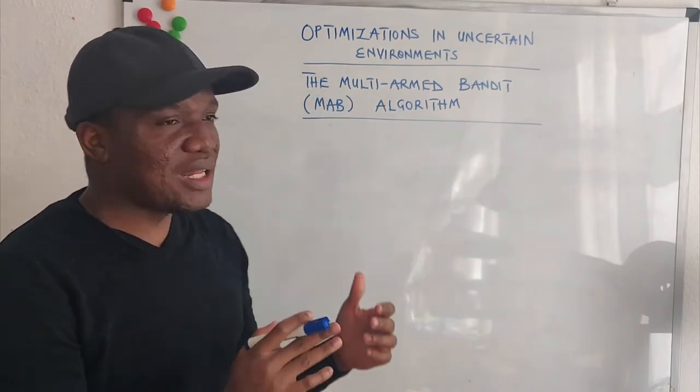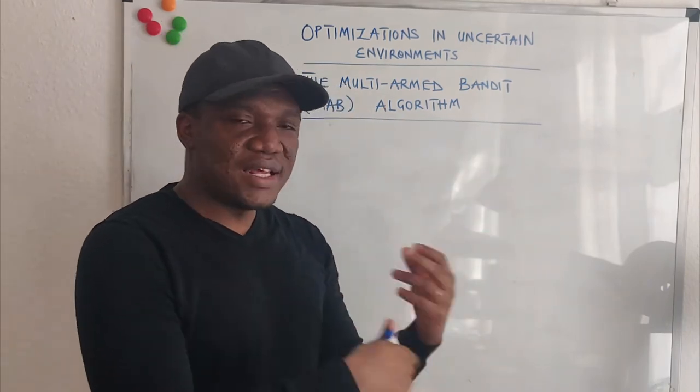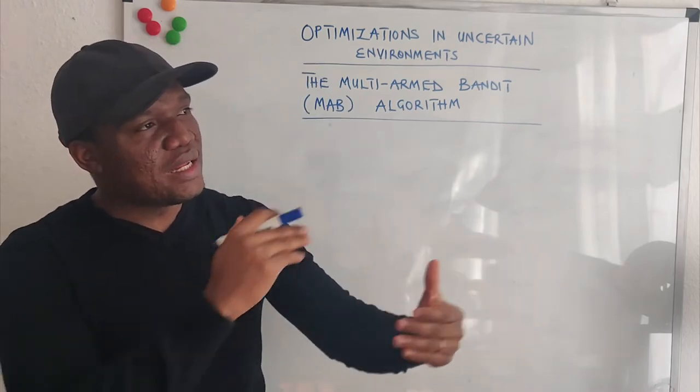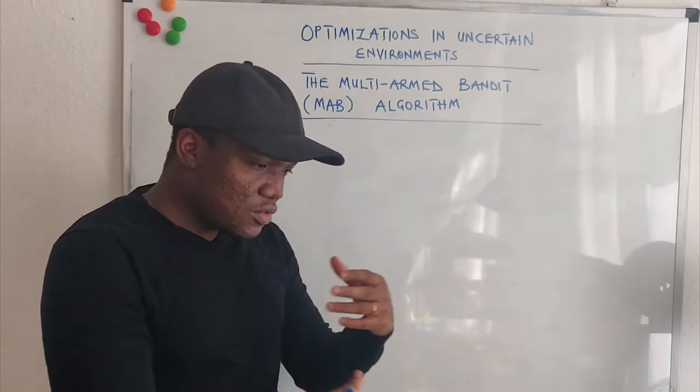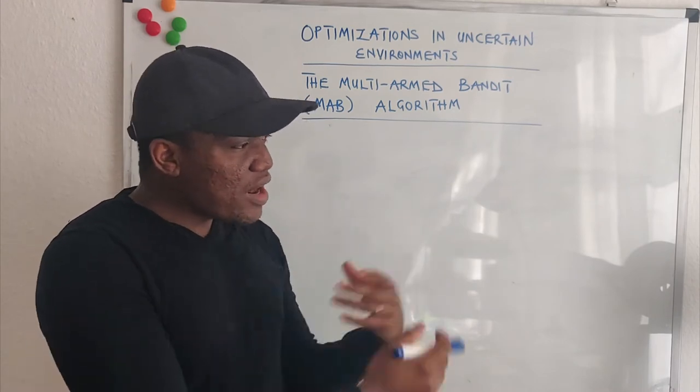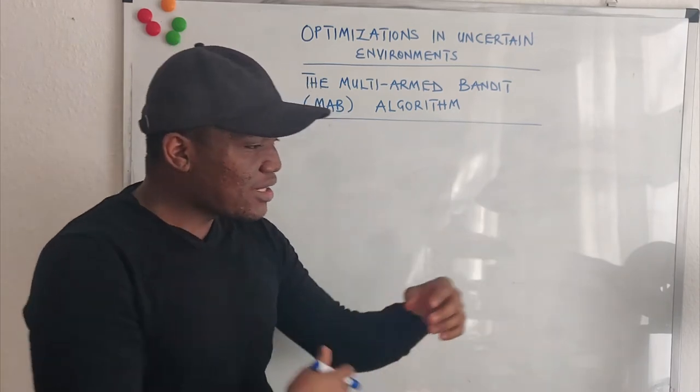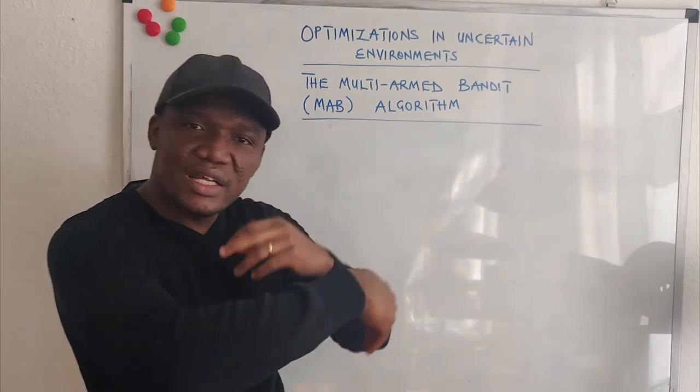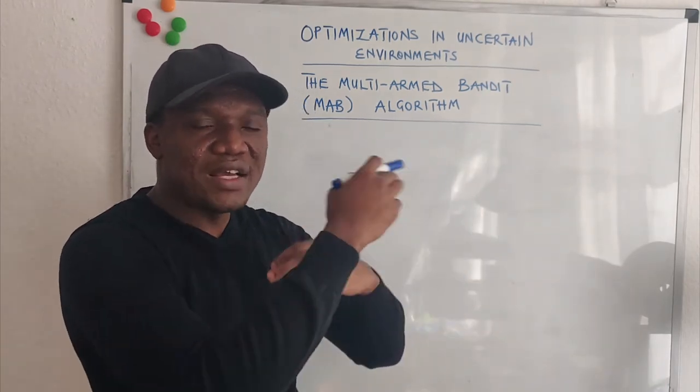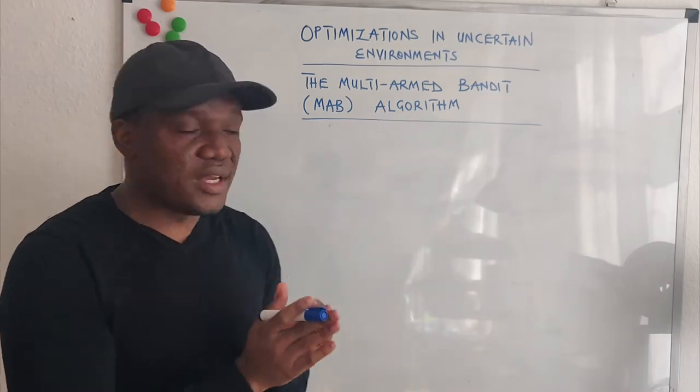The thing about reinforcement learning is that because it's a live learning system, you learn the optimal actions over time. So you have to repeatedly interact with the environment, measure the state, take an action, get a reward, check if it is a positive or negative reward, and then it reinforces your next action. It advises you on the next action to take.